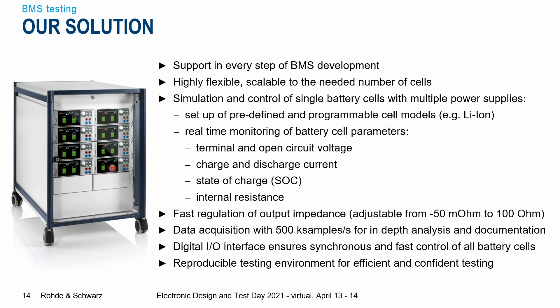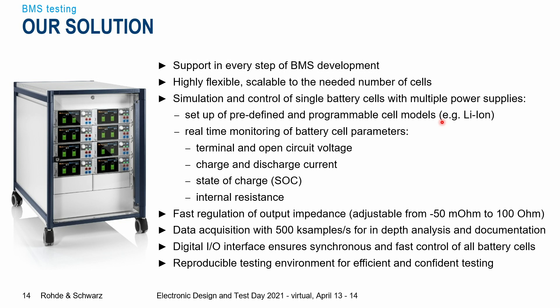Also, if you no longer need the system, you can take the power supplies out and use them as regular benchtop power supplies. Having one individual output per battery cell means you can also control every cell individually — setting up a predefined or programmable cell model as discussed during battery cell simulation. You can control and monitor each battery cell parameter in real time: the open circuit voltage, terminal voltage, charge and discharge current, state of charge, and internal resistance. We also offer very fast regulation of output impedance, adjustable from minus 50 milliohms up to 100 ohms. The fast data acquisition of 500,000 samples per second offers in-depth analysis and documentation for optimization.